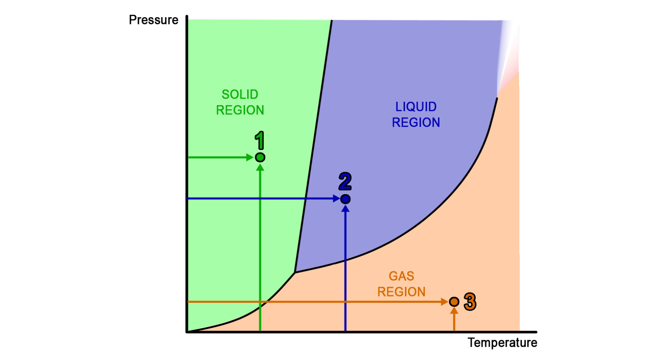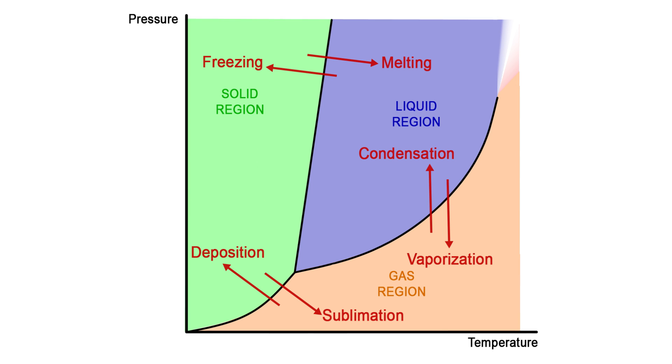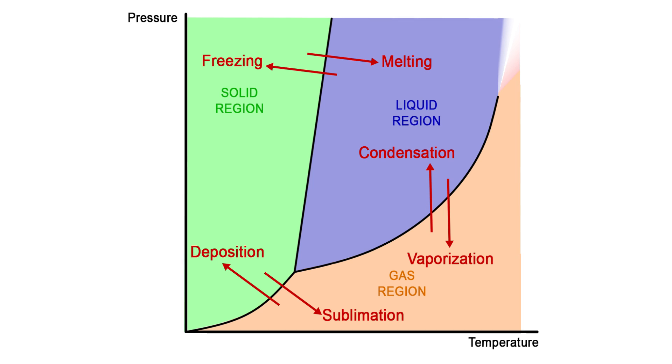Note that these diagrams are different for different substances. The melting, vaporization, and sublimation temperatures at a given pressure are different for every substance, and PT diagrams are typically not drawn to scale. We are simply trying to convey the possibilities.